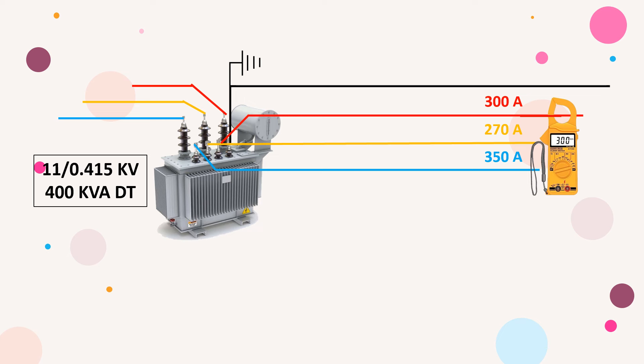Now you measure the voltage in all phases. Suppose phase-to-neutral voltages in RN, YN, and BN come as 226, 228, and 224 volts.